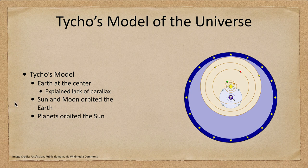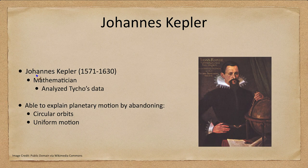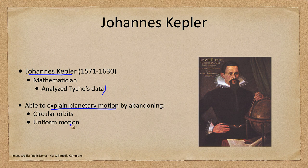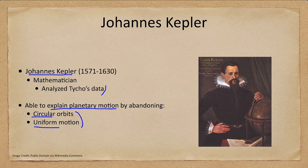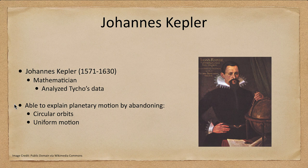Working for Tycho was Johannes Kepler, the mathematician who analyzed the data. He was able to explain planetary motion in a much simpler manner by getting rid of circular orbits and uniform motion, which had been the belief since the time of Aristotle — things believed for well over a millennium, pushing up to almost two millennia. He gave us three laws of planetary motion that we will look at over the coming slides.